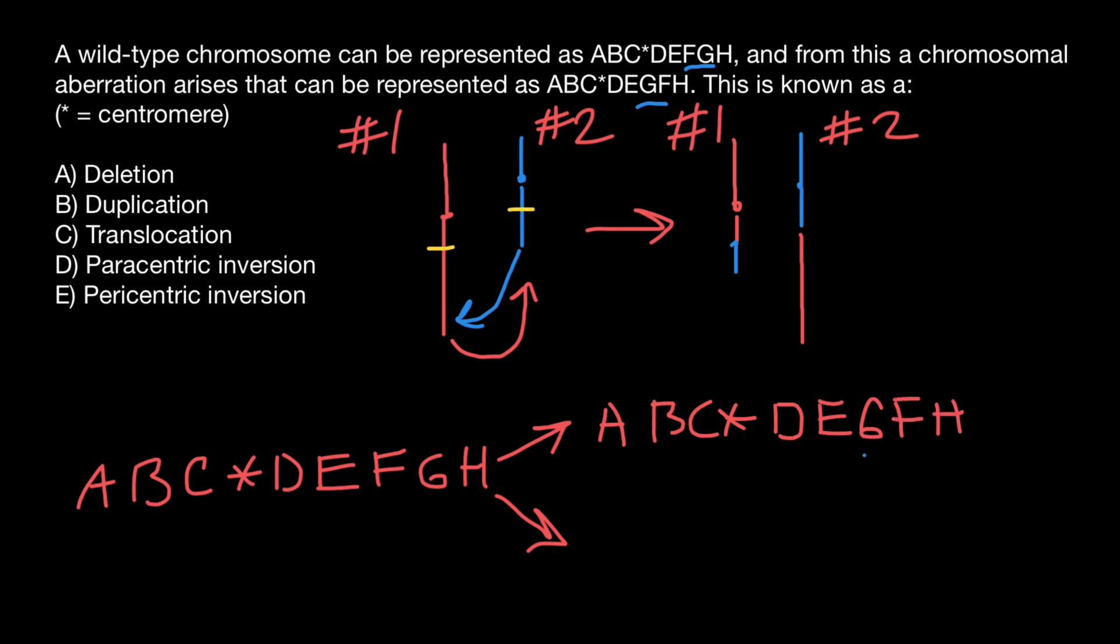So where is the breakage happened? It happened between fragment F and G. So double breakage have to happen. And this piece has been inverted and inserted back.